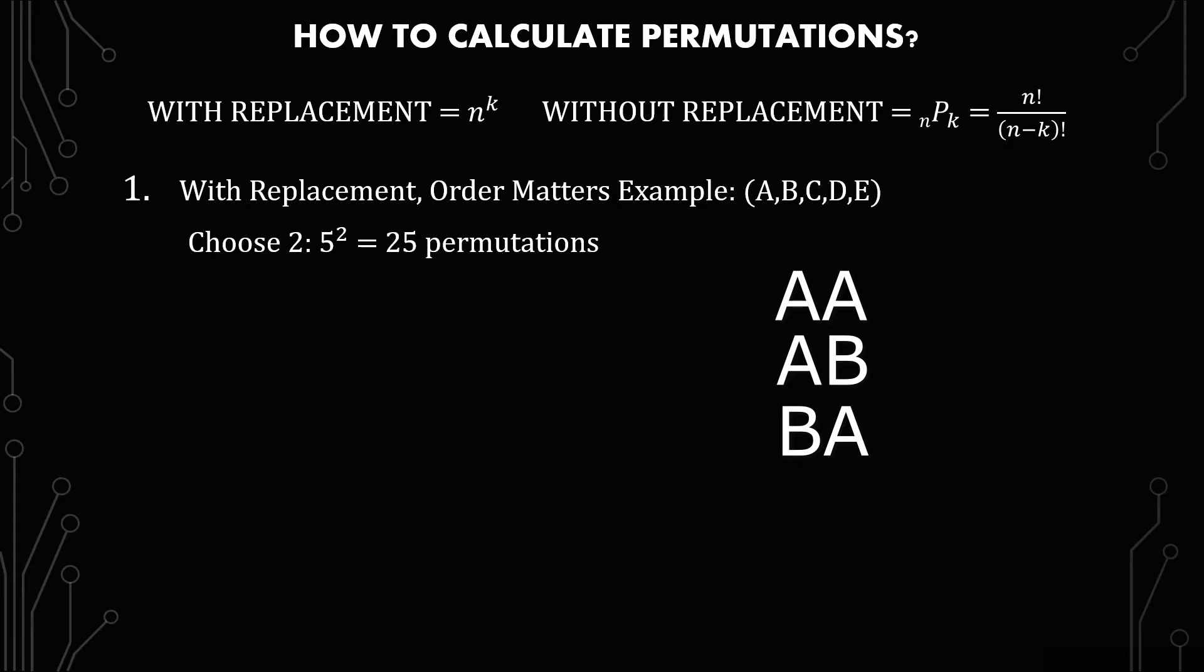The other important thing to notice is that order matters here. So A, B and B, A are two different permutations.